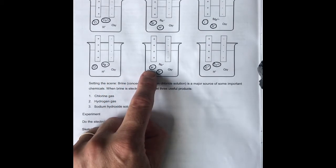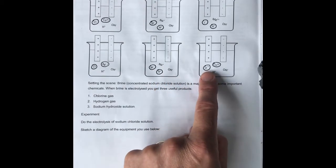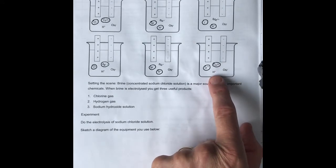Bromine is a halogen which will be given off first, and hydrogen is less reactive than sodium. Oxygen is given off, and copper is given off because it is less reactive than hydrogen. Okay, so we can't do the experiment here.